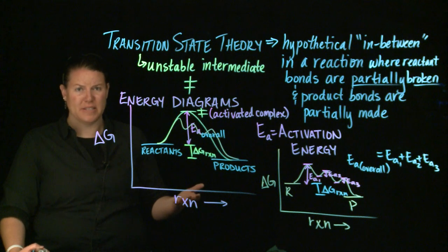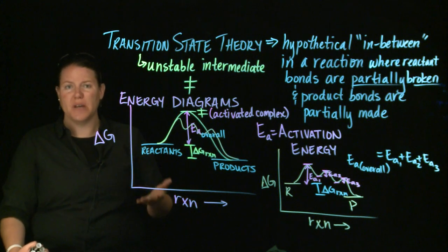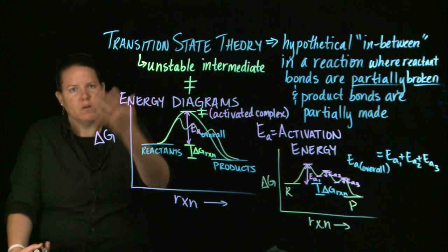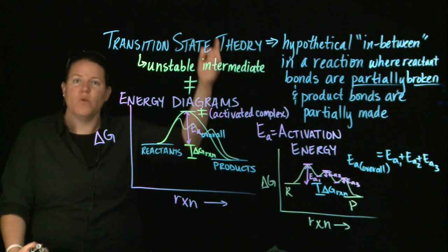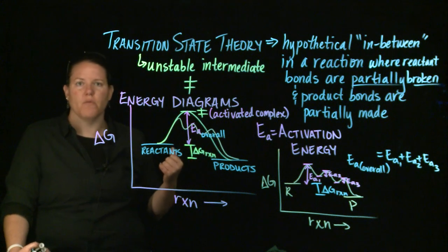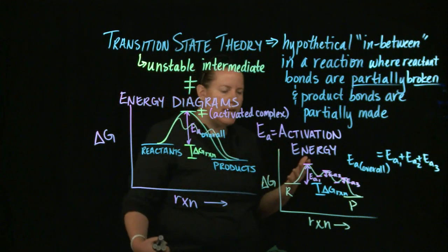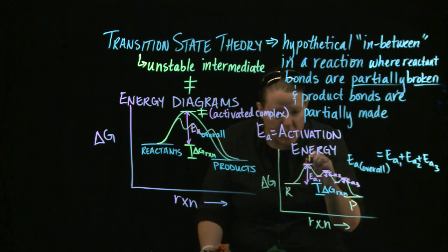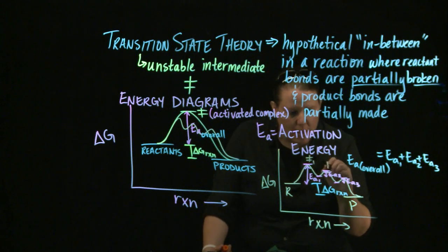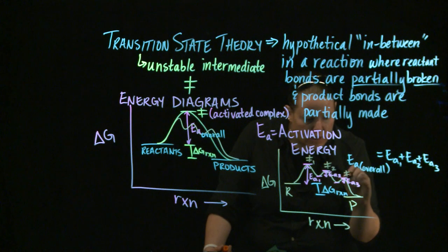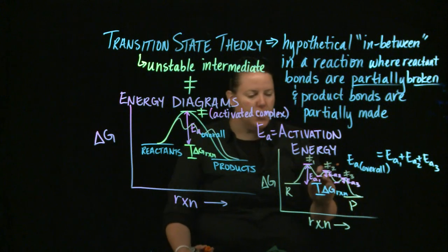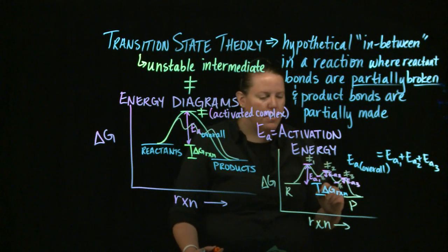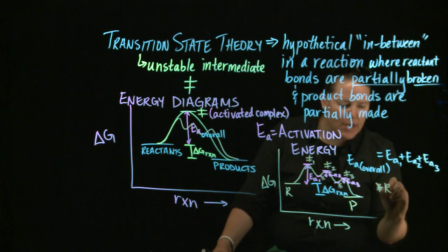That's basically what a catalyst does. The best catalysts are the recyclable ones — ones that are used in the first step and then remade at the end so they can be used over and over again. In this three-step diagram, I have three activation energies and three transition states: transition state one, transition state two, and transition state three. The two valleys in between are reaction intermediates.